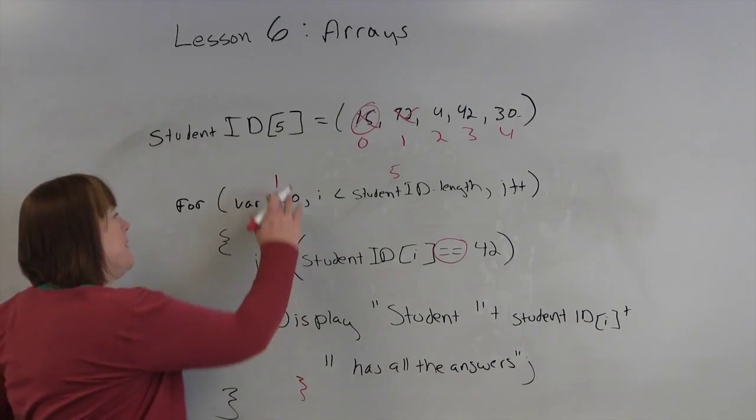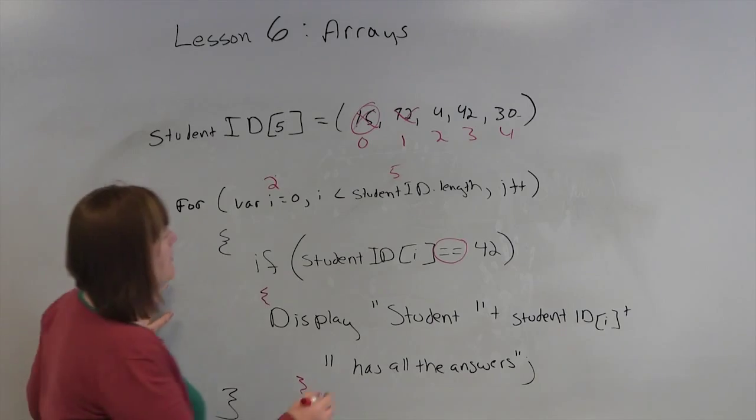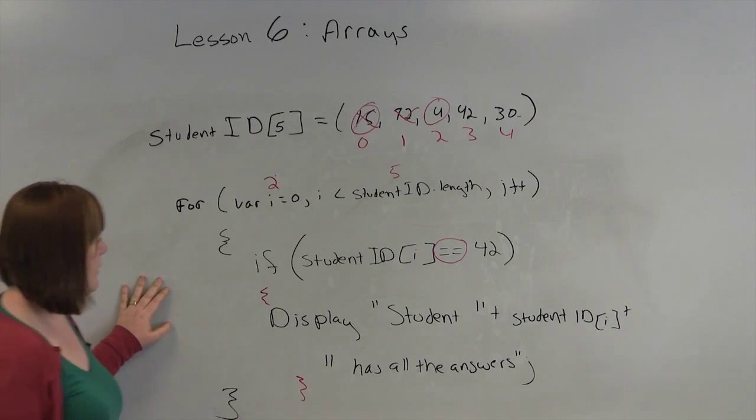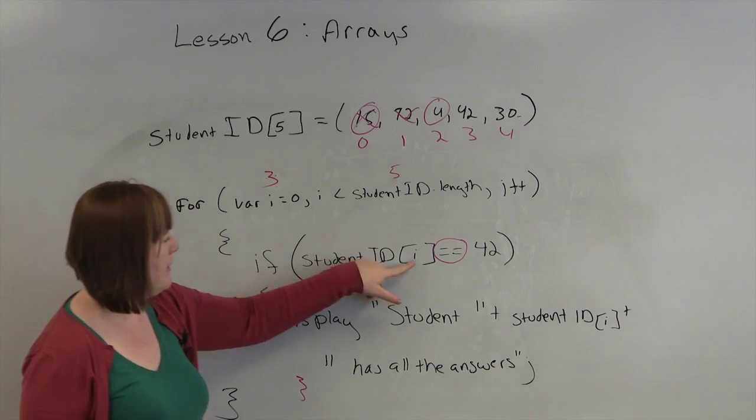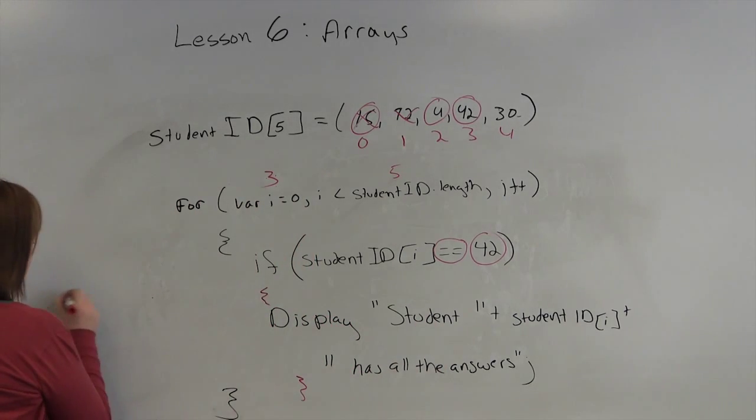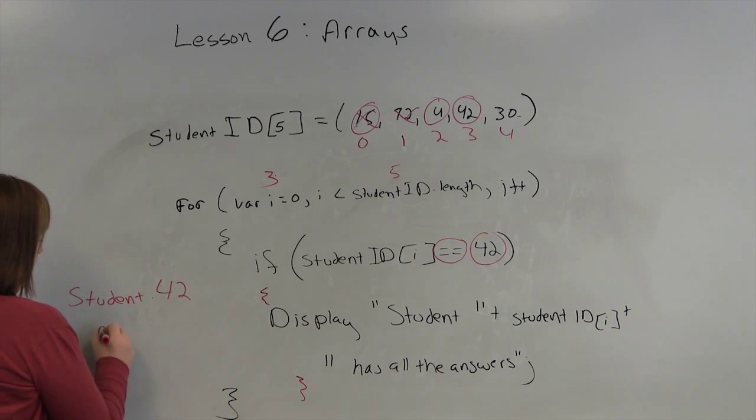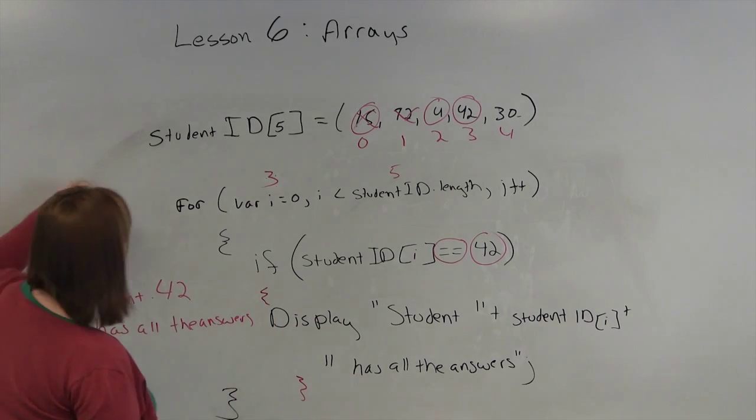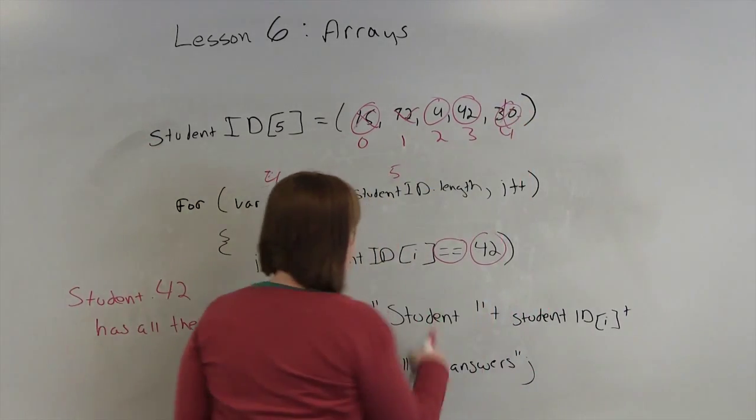2 is less than 5. We check what's in here. 4 is not equal to 42. Nothing happens. We increment i. 3, we check. If studentid at the spot i is 42, is equal to 42, we display on screen. Student 42 has all the answers. We finish that. We drop out. This becomes 4 if 30 is equal to 42, which it's not. So nothing happens.